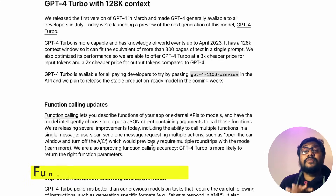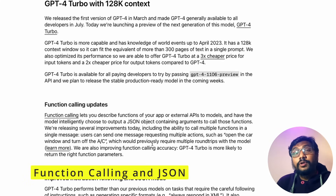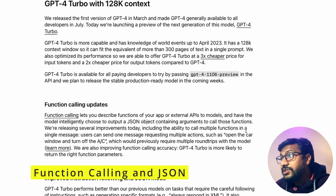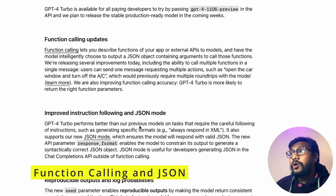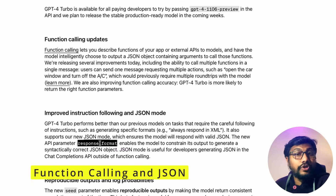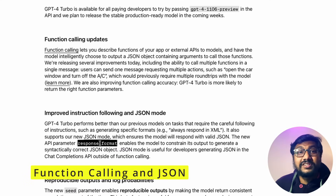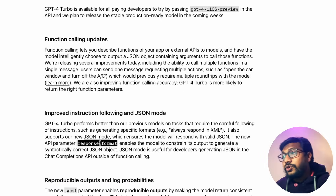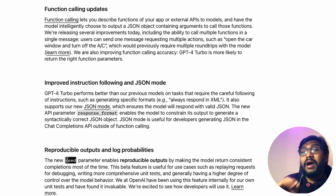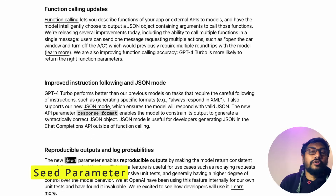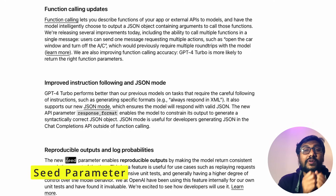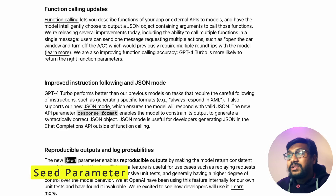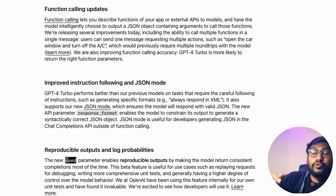There is a function calling update which lets you call multiple functions from OpenAI responses. For JSON output, there is a consistent response format — you can specify JSON and you will always get JSON back. They have also added a new seed parameter, similar to what exists in machine learning algorithms, so developers can get consistent, reproducible output. Use the same seed value, for example 42, to get the same response.